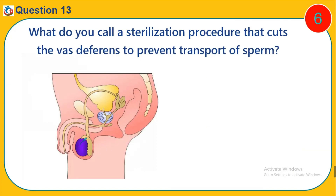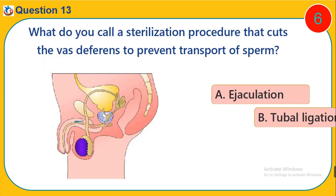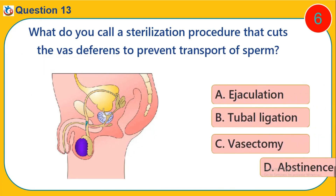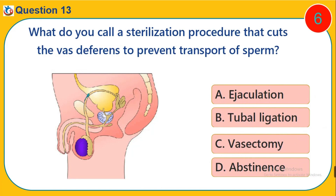Question 13. What do you call a sterilization procedure that cuts the vas deferens to prevent transport of sperm? A. Ejaculation. B. Tubal ligation. C. Vasectomy. D. Abstinence.